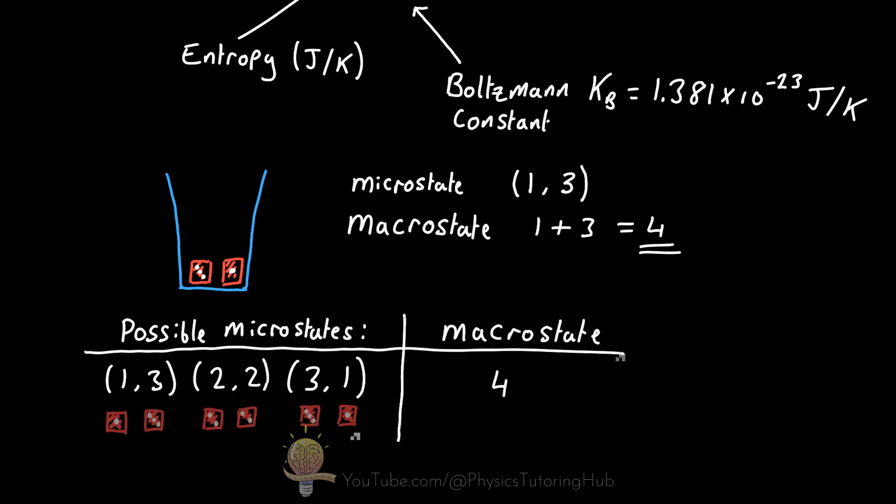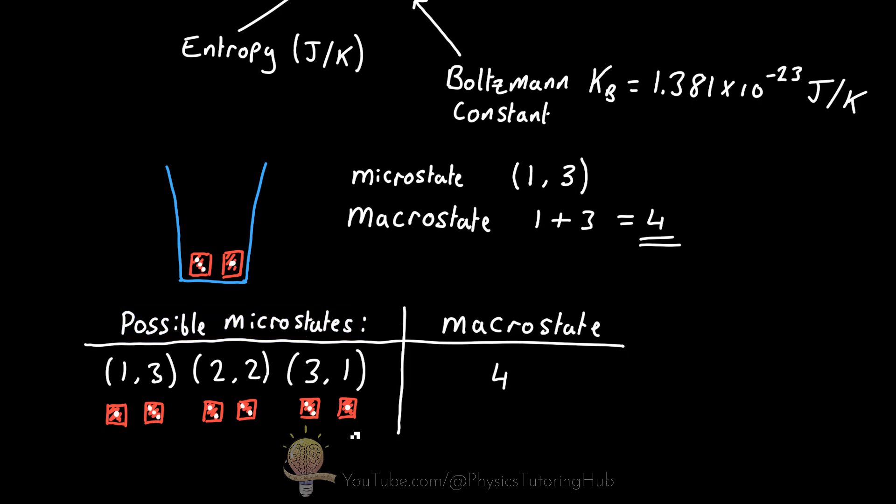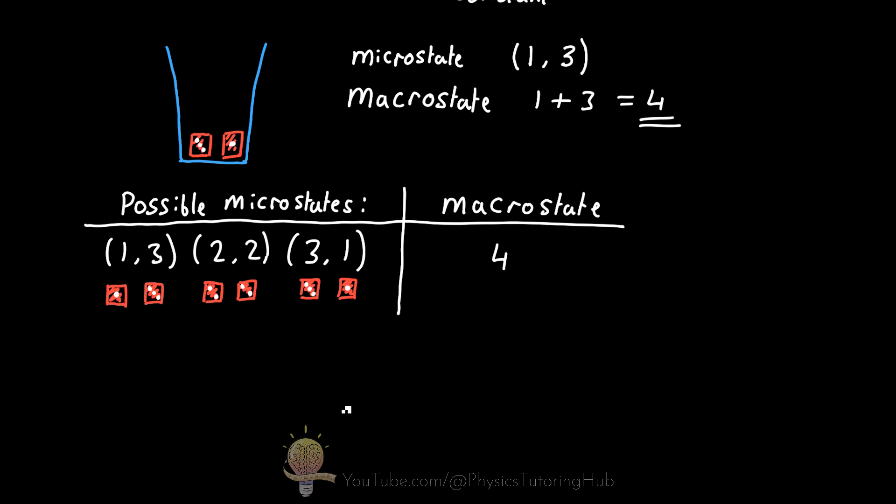If we shake the dice again in this glass, what is the chance of getting a macrostate of four again? In fact, what we should be asking is what is the most likely macrostate we'll get for this system every time we shake the glass? Well, the answer to our question is whatever macrostate has the highest number of microstates, or in other words, the macrostate with the highest entropy.